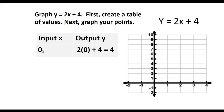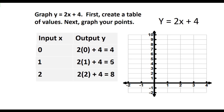When we begin with x equals 0, we substitute 0 in for x into the equation, and we get the y output as 4. Next, substitute 1 into the equation, and you'll get a y output of 6. And lastly, substitute x equals 2 into the equation, and get the y output of 8.